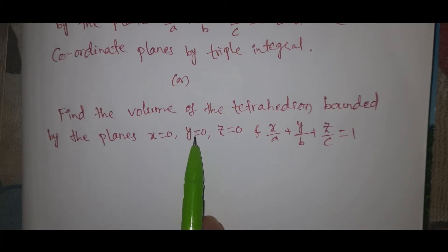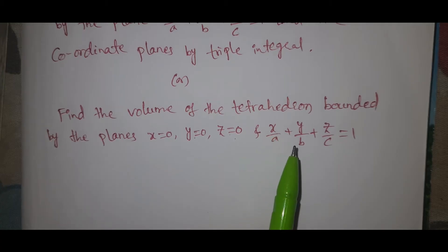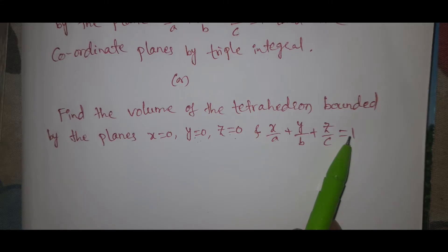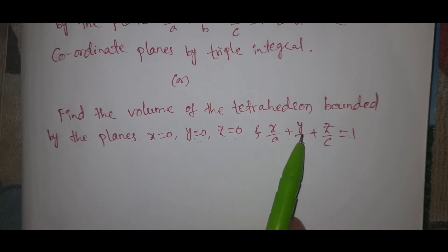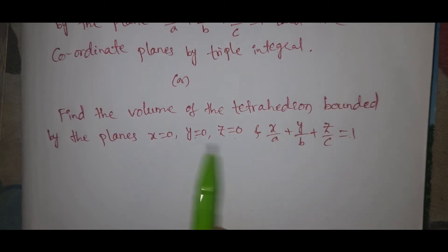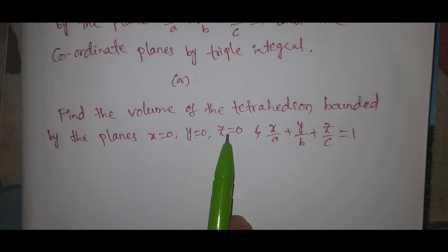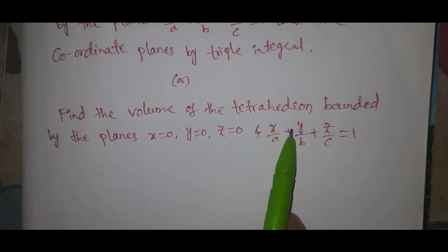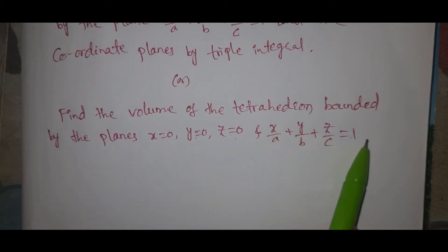We find the volume of the tetrahedron bounded by the plane x = 0, y = 0, z = 0, and x/a + y/b + z/c = 1. Setting x = 0 and y = 0 gives us intercepts. On the z-axis, z ranges from 0 to c.